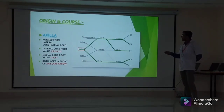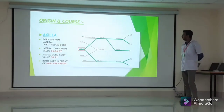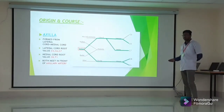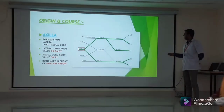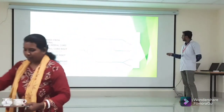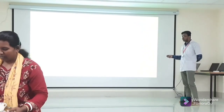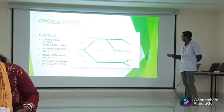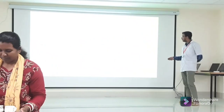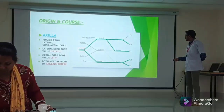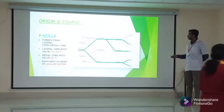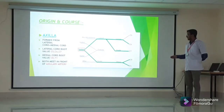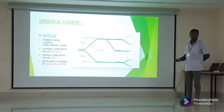Let's see its origin and course in the axillary position. The median nerve is mainly formed from two cords: one lateral cord and one medial cord. The lateral part originates from C5, C6, and C7 spinal segments, and the medial cord has the root value of C8 and T1. They both meet in front of the axillary artery to form the median nerve.